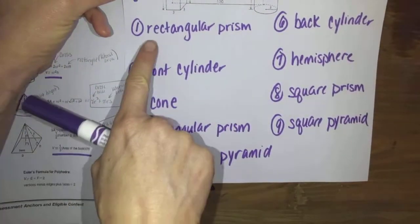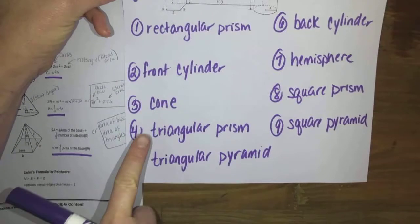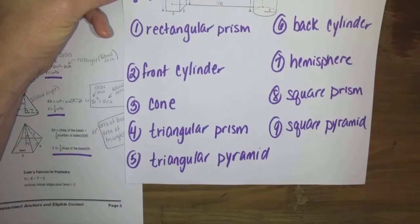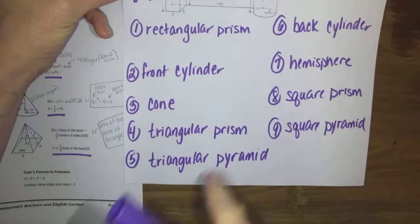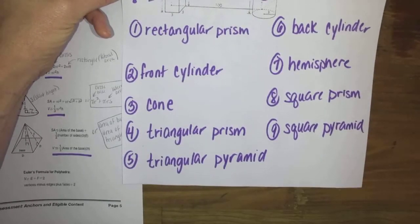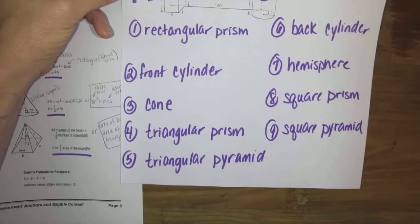Make sure you have these listed: one, rectangular prism; two, front cylinder; three is cone; four, triangular prism; five, triangular pyramid; six is your back cylinder; seven is your hemisphere; eight is your square prism; and nine is your square pyramid.